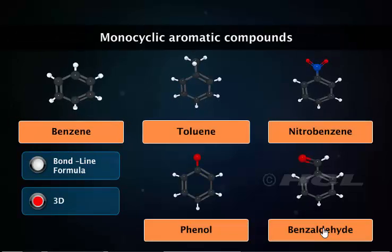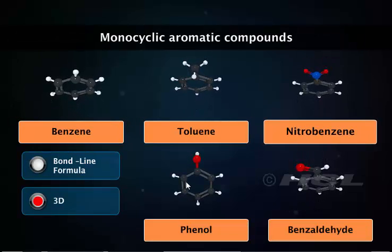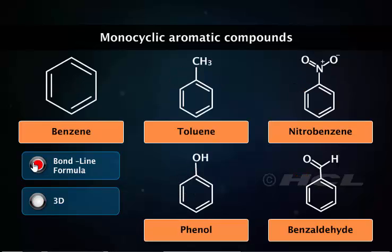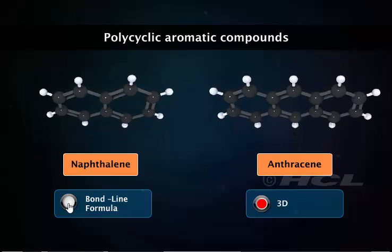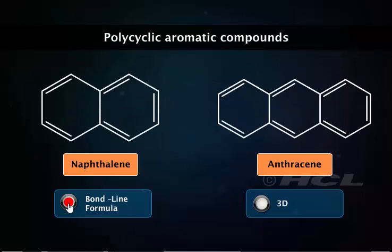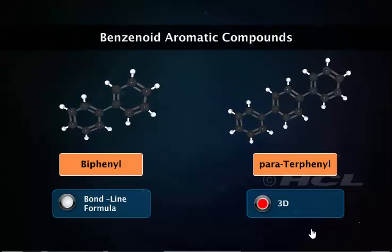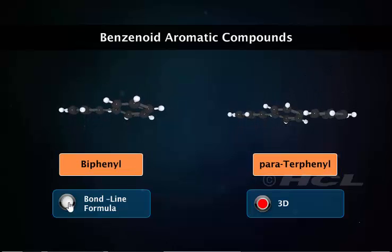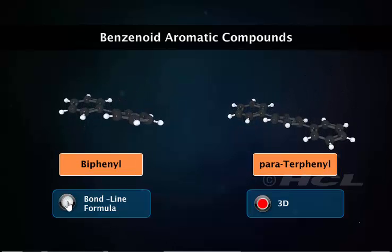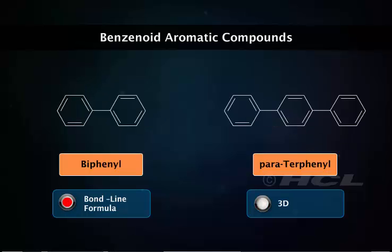Benzene, toluene, nitrobenzene, phenol, and benzaldehyde are monocyclic aromatic compounds. Naphthalene and anthracene are polycyclic aromatic compounds. Benzenoid aromatic compounds also include biphenyl and terphenyl, which have isolated benzene rings in their structures.